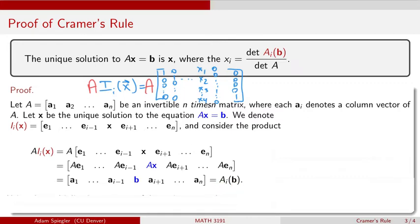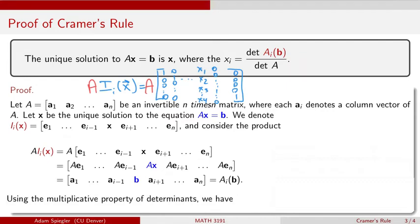So this is exactly what we called A sub i(B). To rehash: taking matrix A times the identity matrix whose i-th column has been replaced by X — where X is the solution to this equation — is equivalent to replacing the i-th column of matrix A with B. Now let's use what we know about the multiplicative property of determinants to finish up this proof.